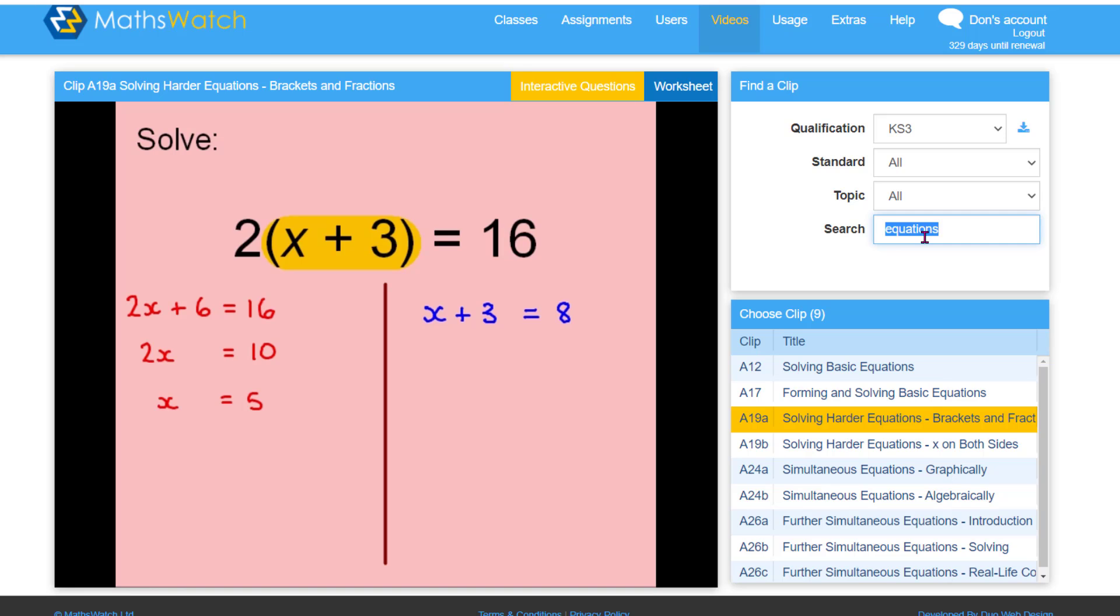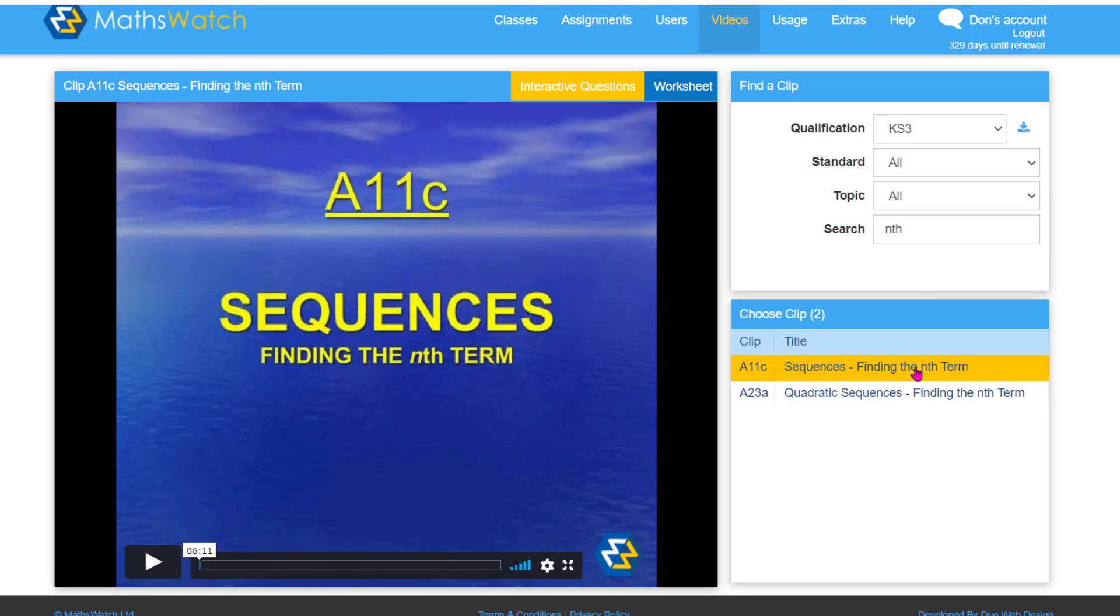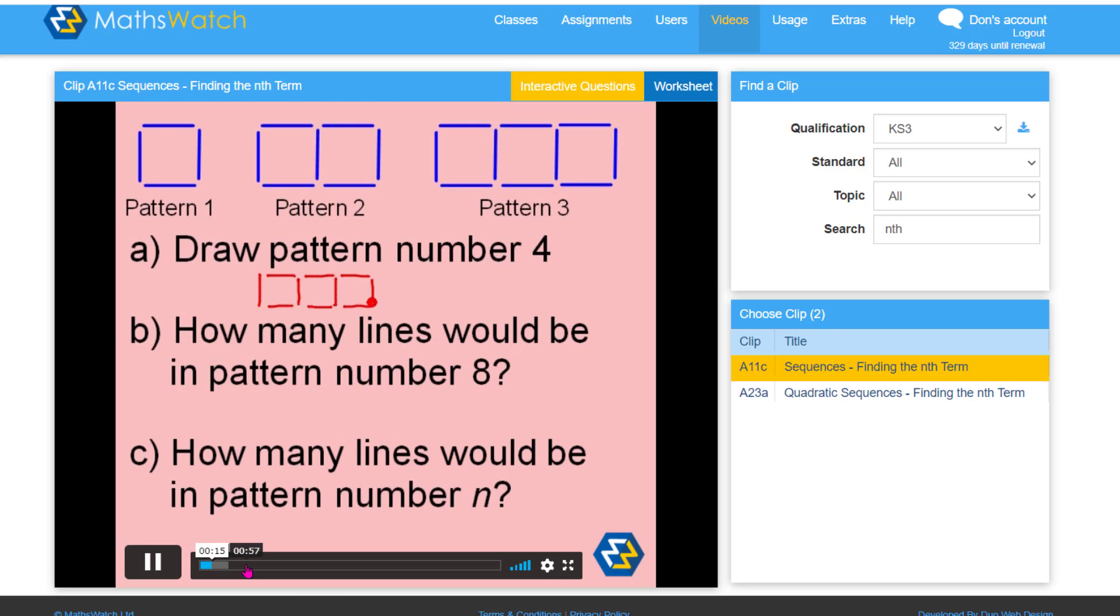So remember we did some nth term work so we can type in nth term and you've got sequences finding the nth term. Click that and you can press play. To go and add on plus one. So that's a bit more difficult. And then rule.